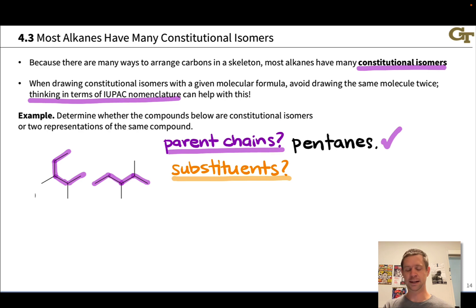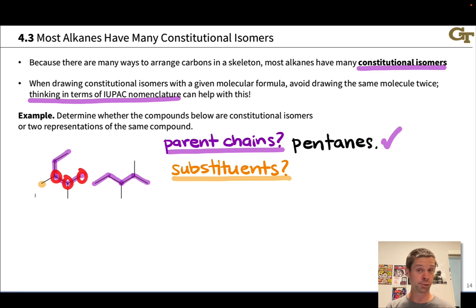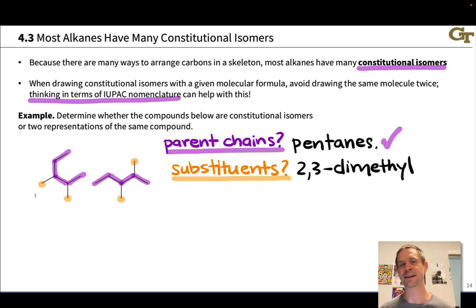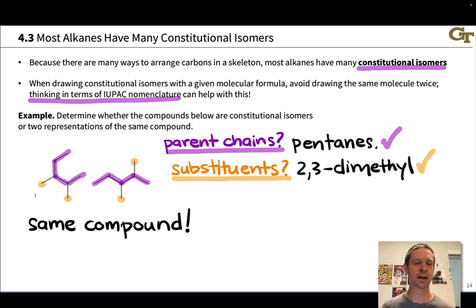But they also have substituents, and we want to consider not just what the substituents are but what their numbers would be. I see two methyl groups in each of these. In the first structure, one methyl group appears at carbon 3 and another at carbon 2, giving us 2,3-dimethylpentane. In the other structure, similarly one methyl group is at carbon 3 and another at carbon 2. So in both cases we have 2,3-dimethyl substituents, and the names of the two compounds are exactly the same: both are 2,3-dimethylpentane.